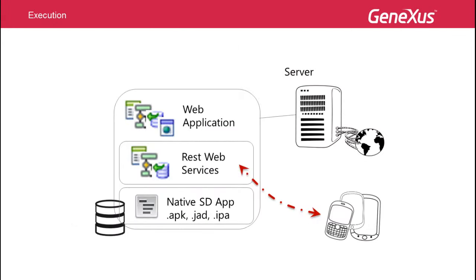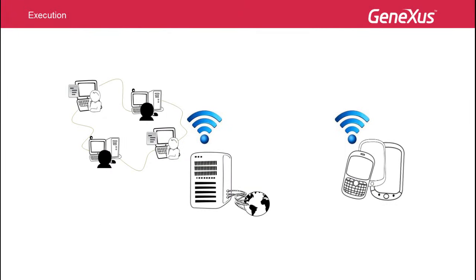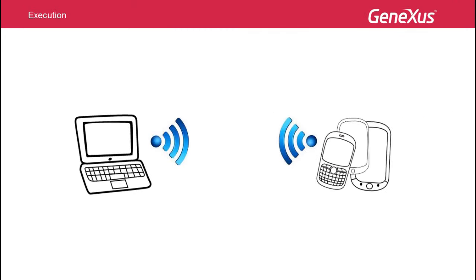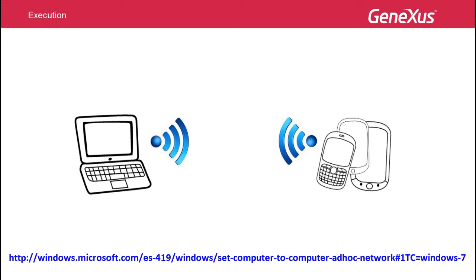Once the application is installed on the device, we can see various options to run it, such as accessing REST services from the application. REST services can be installed on a computer in a private network with Wi-Fi or on a server available online, and the smart device application will connect via Wi-Fi to access them. Another option is to configure a computer-to-computer network, also known as an ad-hoc network — a Wi-Fi connection directly between two computers or between a computer and a device. In this case, the development computer works as a web server.